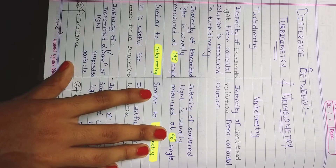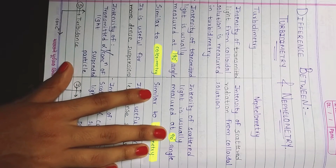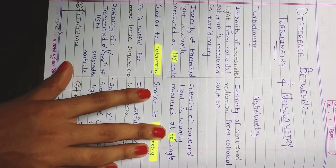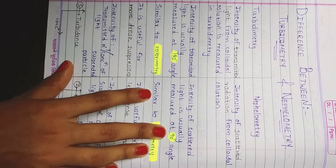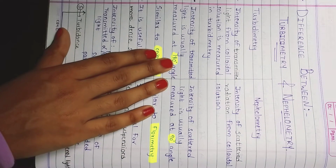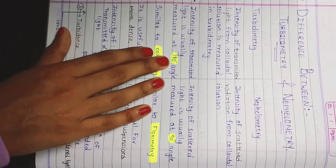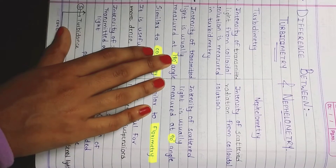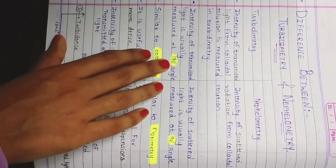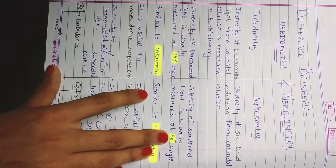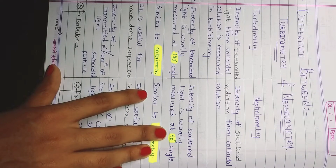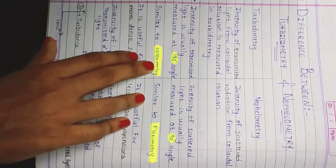This is very important, even in terms of MCQs — exams often ask this type of question. Remember that in turbidimetry the angle is 180 degrees and in nephelometry the angle is 90 degrees.